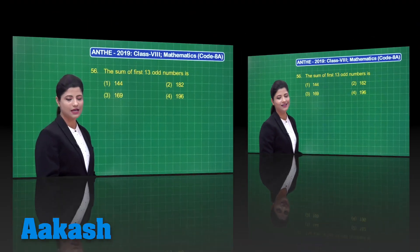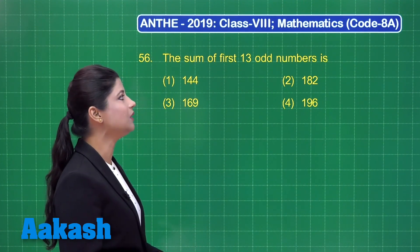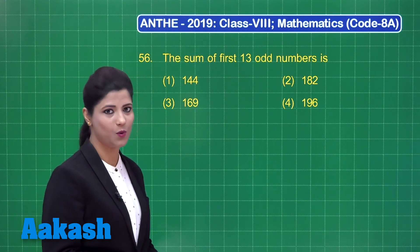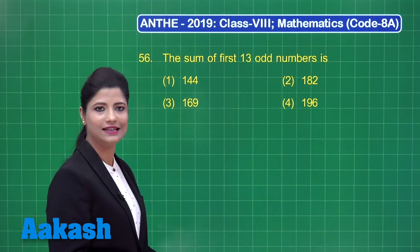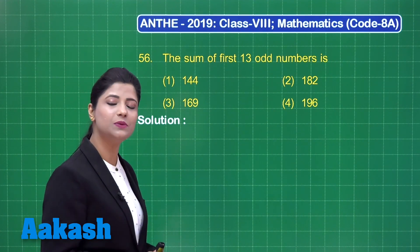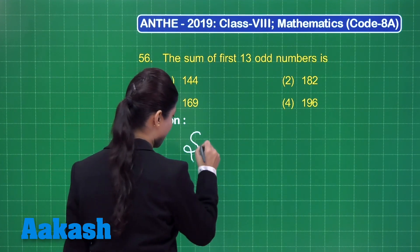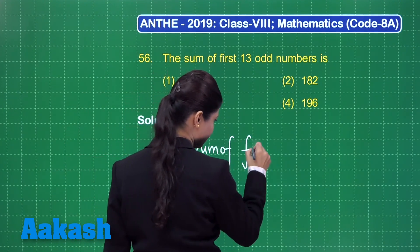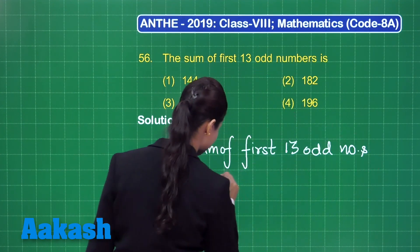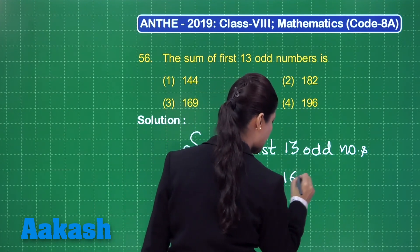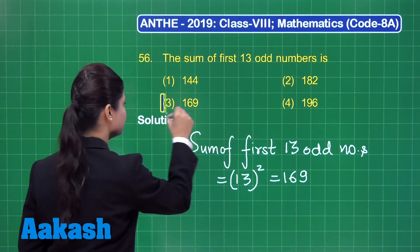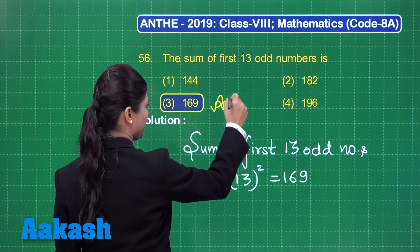Let us take up question number 56, which states that the sum of the first 13 odd numbers is out of these 4 options: 144, 182, 169, and 196. The formula to obtain the sum of the first n odd numbers is equal to n squared. So the sum of the first 13 odd numbers equals 13 squared, and the square of 13 is 169. The correct answer is option number 3.